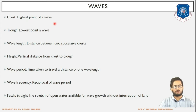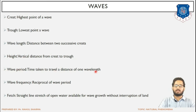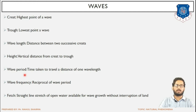To recap the basic terminologies: crest is the highest point of the wave; trough is the lowest point; wavelength is the distance between two successive or consecutive crests; height is the vertical distance from crest to trough. Wave period is the time taken to travel a distance of one wavelength — that is, the time taken to travel between two successive crests. Wave frequency is the reciprocal of wave period: f = 1/T.